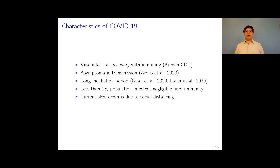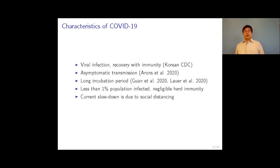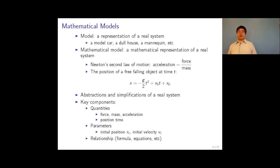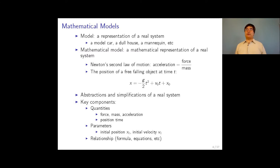We're going to look at how we use mathematics to incorporate these characteristics of COVID-19 and develop a model to make predictions. A mathematical model is a representation of a real system — like a model car, a dollhouse, or a mannequin. They're not the real thing, but they represent it. Mathematical models use mathematics to represent a real system.